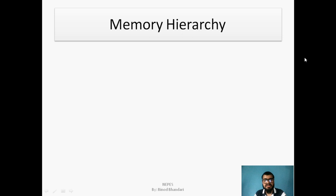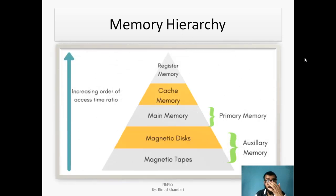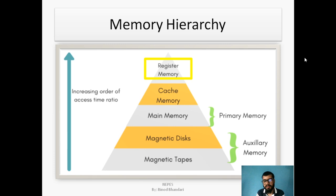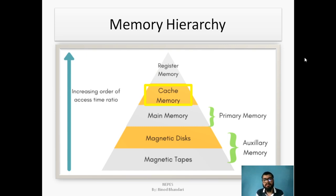Now we can see the memory hierarchy. The first is register memory — these are embedded inside the CPU, very small in size, and hold data in the form of charges, 0 and 1. Next is cache memory, which is also small in size and very near to the central processing unit.